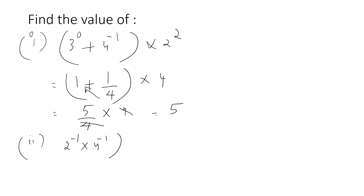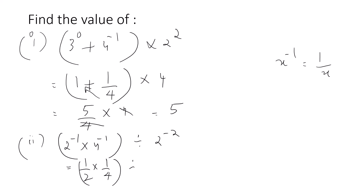The second part: 2 raised to minus 1 into 4 raised to minus 1 divided by 2 raised to minus 2. We write 2 raised to minus 1 as 1 by 2, 4 raised to minus 1 as 1 by 4, giving 1 by 8. Then 2 raised to minus 2 is 1 by 4, and dividing by 1 by 4 means multiplying by 4, so 2 raised to 2 is 4. The answer is 1 by 2.